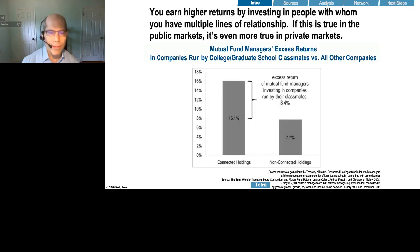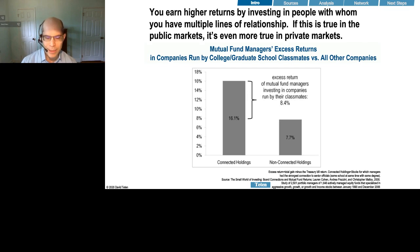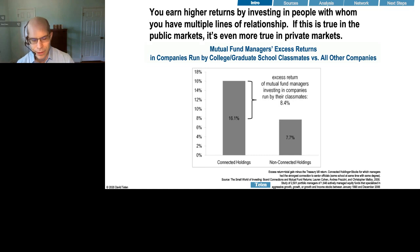I'm going to start with the most amazing data I've ever seen in the investment research universe. This is a study done of mutual fund managers showing their excess returns when they invest in companies run by management teams who went to college or graduate school with the fund manager. In other words, if you invest in a company run by someone who was at your university at the same time as you, you will typically get 840 basis points higher returns.